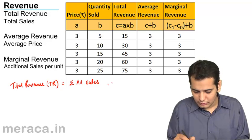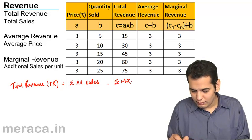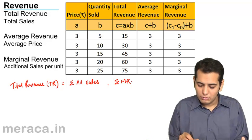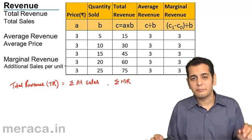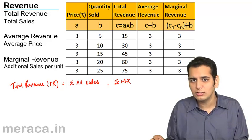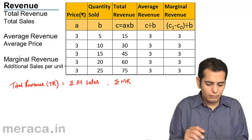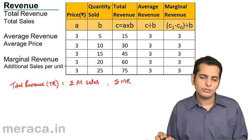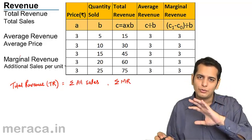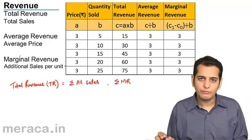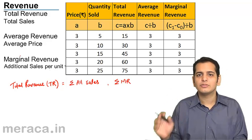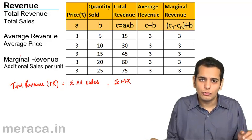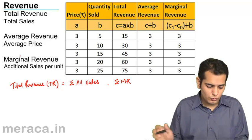Total revenue equals the sum total of all marginal revenues — we'll see what marginal revenue is, but for now understand that total revenue is the summation of MR. Now, what is average revenue? It's the same concept we studied with average cost: average cost was total cost divided by the total quantity of goods. Same is the concept here — total revenue divided by the total quantity of goods sold.